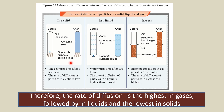From what you have seen, the gel turns blue after a few days — the rate of diffusion of particles in solid is low. Water turns blue after two hours — the rate of diffusion of particles in liquid is higher than in solid. Bromine gas fills both gas jars after 15 minutes — the rate of diffusion of particles in gas is the highest. Therefore, the rate of diffusion is the highest in gases, followed by liquids, and the lowest in solids.